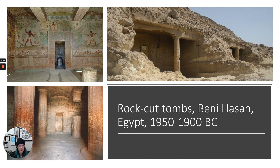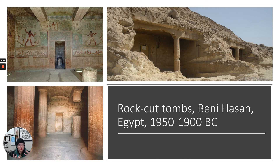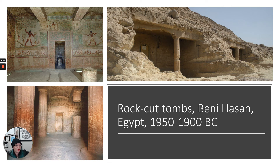This cemetery site has tombs dug into the cliffs, about 150 miles south of Cairo. There are about 39 tombs that have been fully excavated here, and many of them are highly painted. Because they were dug into the cliffside, these paintings are pretty well preserved. We have lots of hieroglyphics, but also scenes of daily life. There are things from the Book of the Dead inscribed in tombs, but also narrative scenes — people fishing on boats, and other scenes from daily life — giving us great preserved records of what Egyptian life was like in this time period.